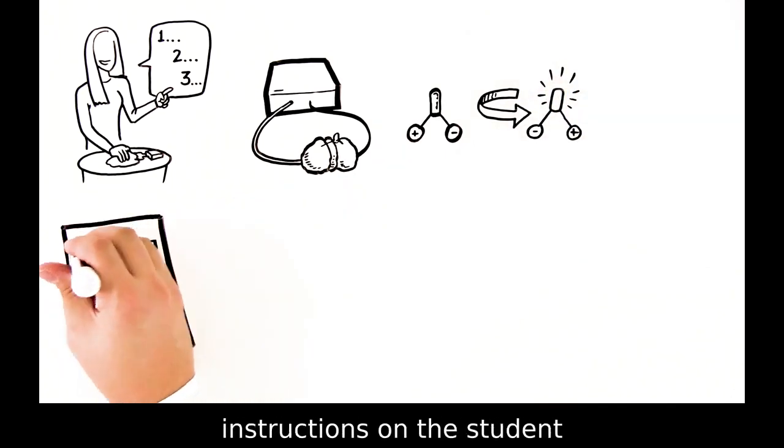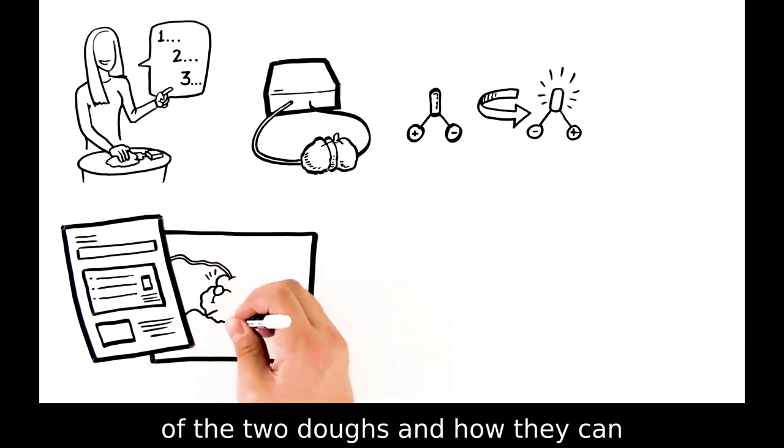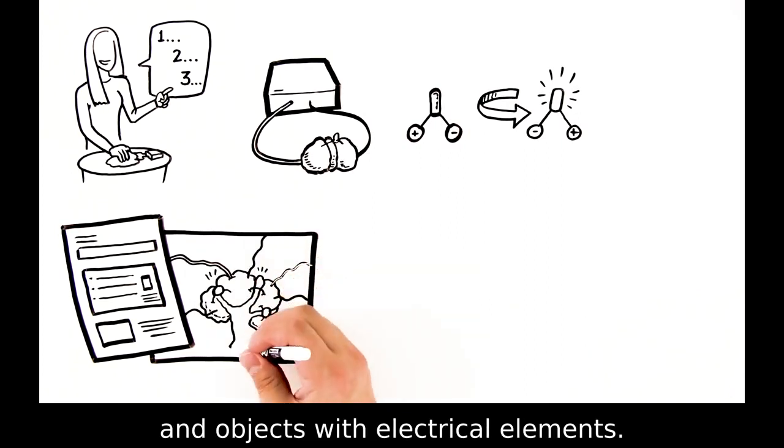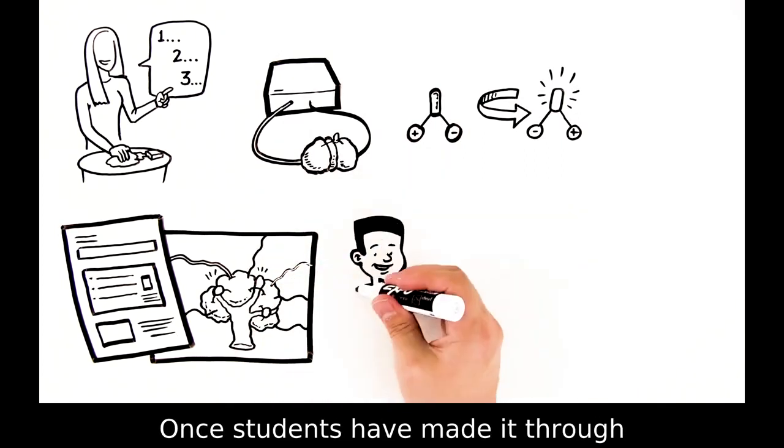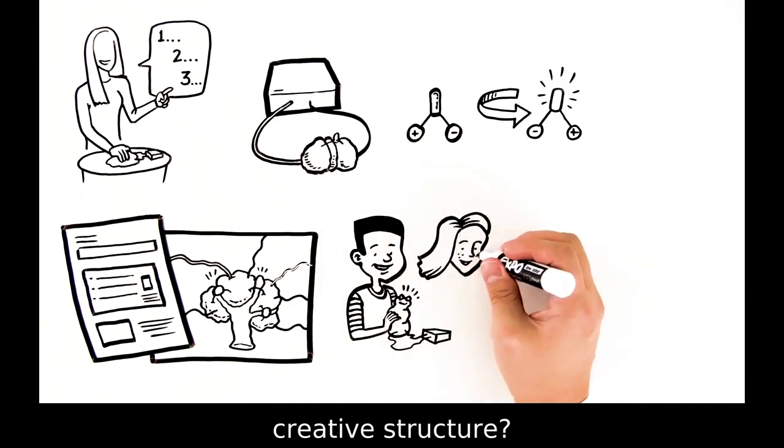Students should follow the instructions on the student worksheet to explore the properties of the two doughs and how they can be used to build statues and objects with electrical elements. Once students have made it through the exercises in the student worksheet, have students make their own creative structure.